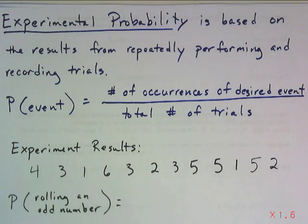Another type of probability is experimental probability. That's found by repeatedly performing and recording trials and basing your experiments on those results. So when you're doing experimental probability, you find the number of occurrences of the desired event in all of your trials over the total number of trials. For example, if I was rolling a die again and these were my results,